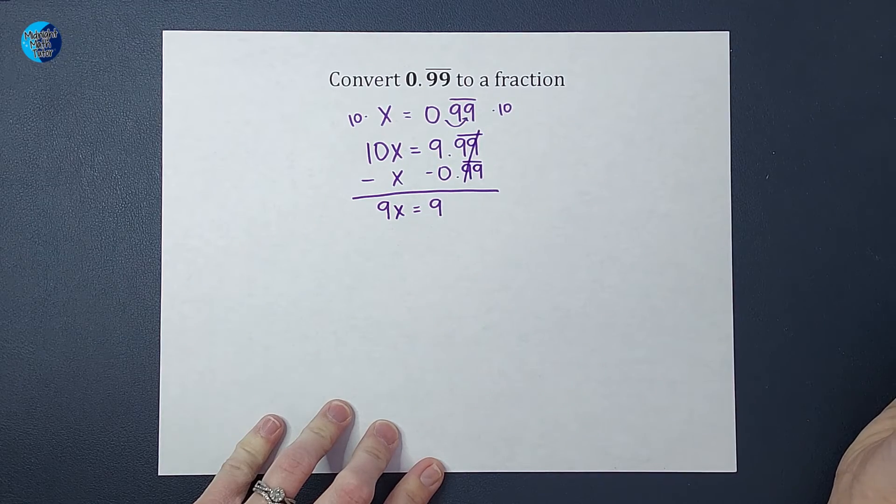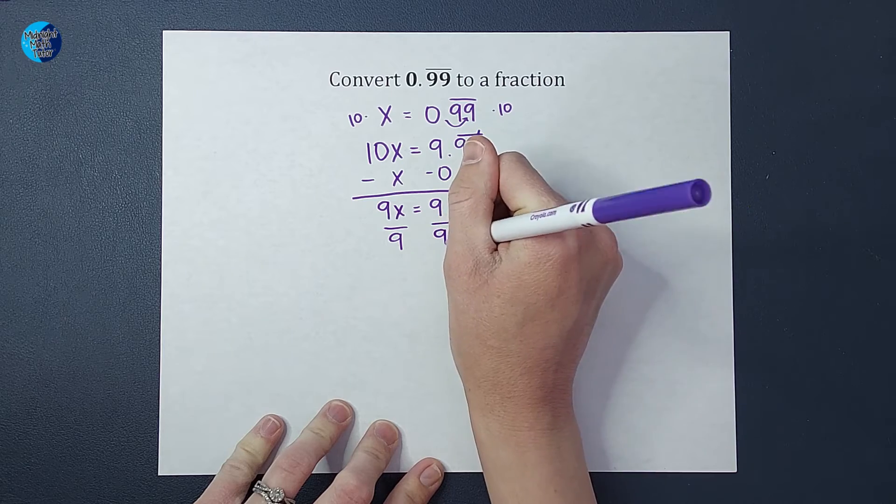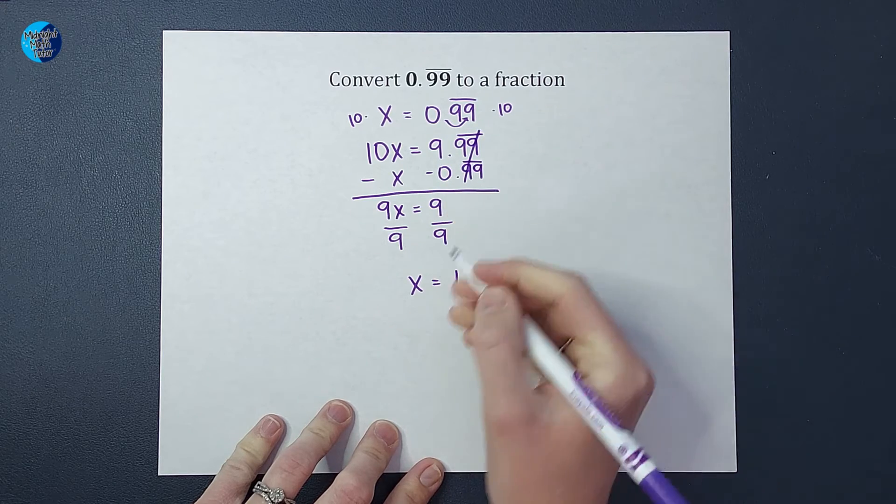And look what's going to happen, guys. When I solve for X, I divide 9 from both sides and I end up with X equals 1.